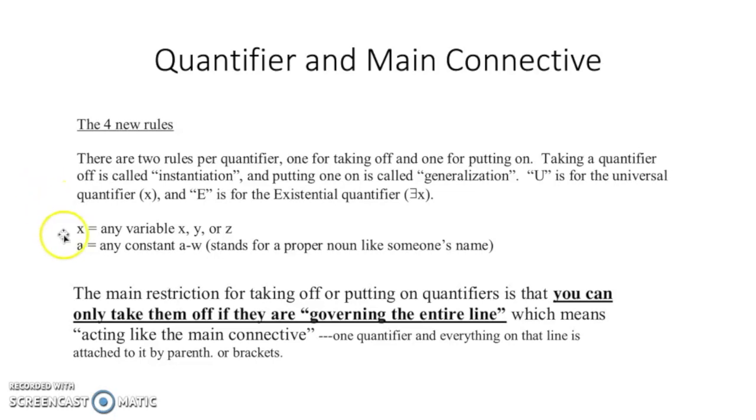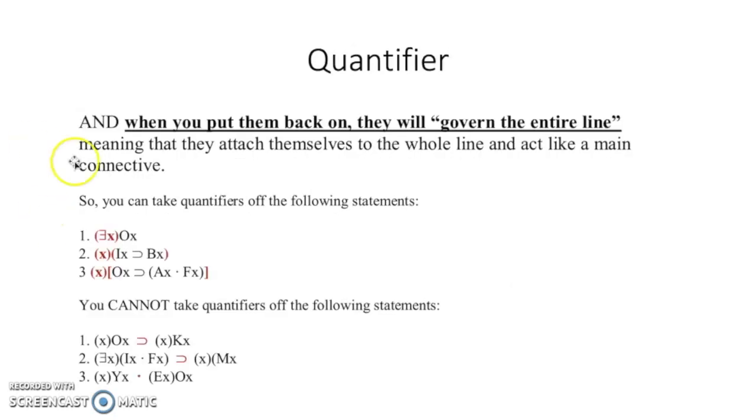So the four new rules are about the universal quantifier and the existential quantifiers. And of course same as what you learned in the last section: x, y, and z hold for variables, a through w are our constants, which means it's actually a specific person in the world or dog, cat, whatever it may be. It's a specific, that's why it's called a constant. So when you put them back on, they will govern the entire line. This is like what we were just talking about, only going the other direction. So if you're going to have the quantifier be the existential quantifier for line one here, then when you take it off it's going to take off from the entire section.